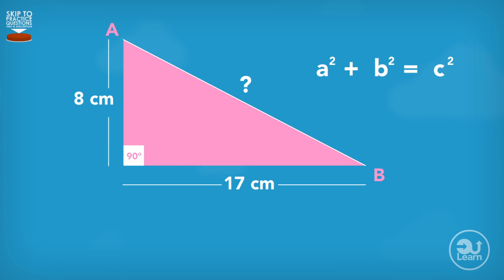Remember, the hypotenuse is the opposite side to the right angle, so C is unknown. The values of A and B are 8 and 17. Going through the same process to calculate C, the final answer is 18.8cm, correct to three significant figures.